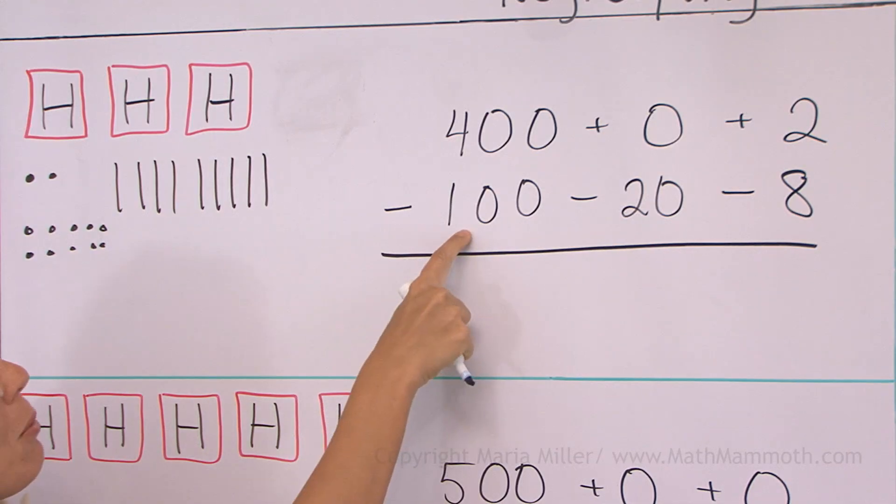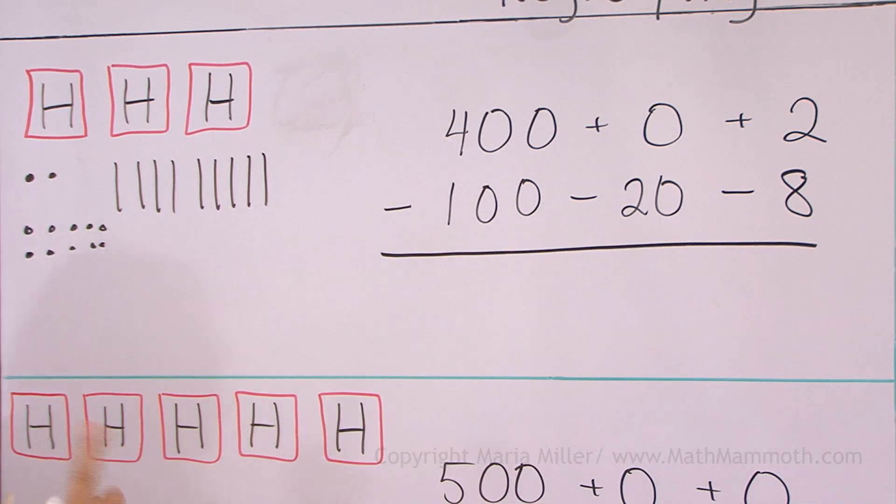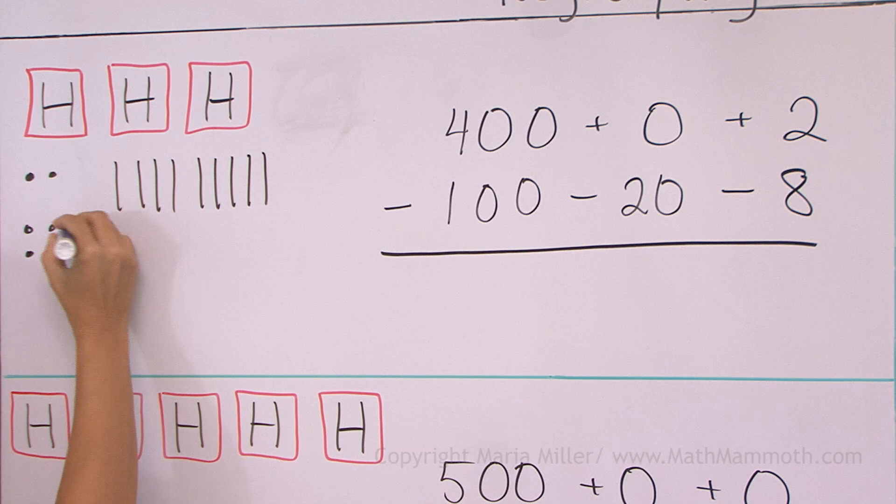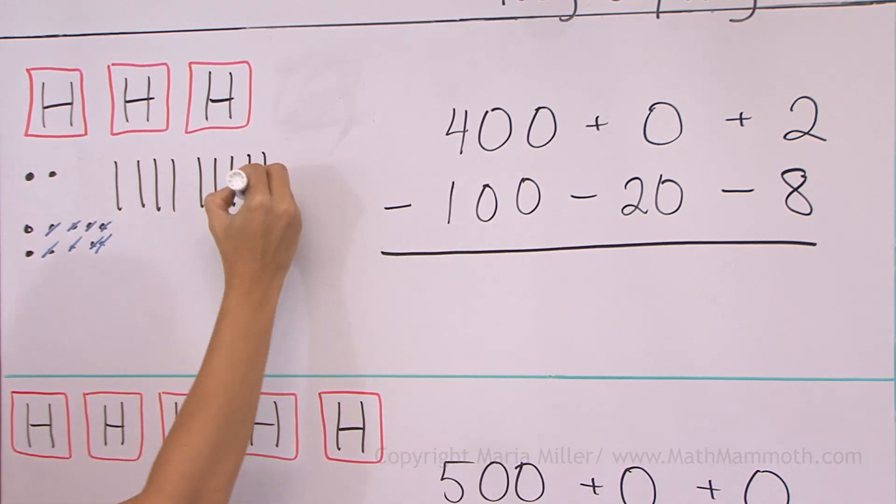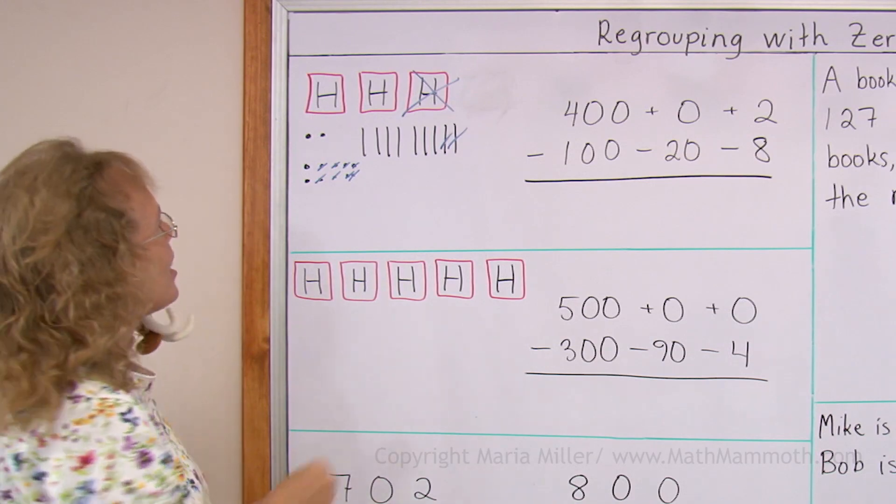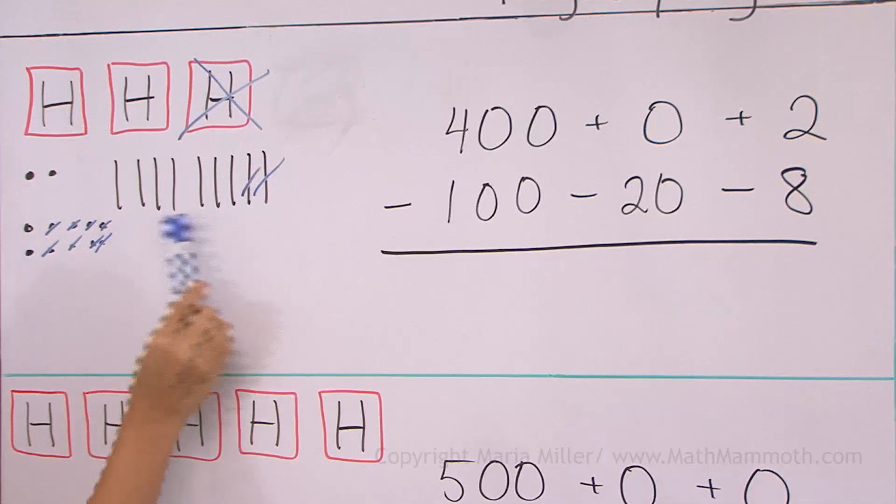I would subtract 100. I mean, when you're doing it over here, you start subtracting 8 ones and that order. And then two tens and then 100. And now we can see the answer would be 274.